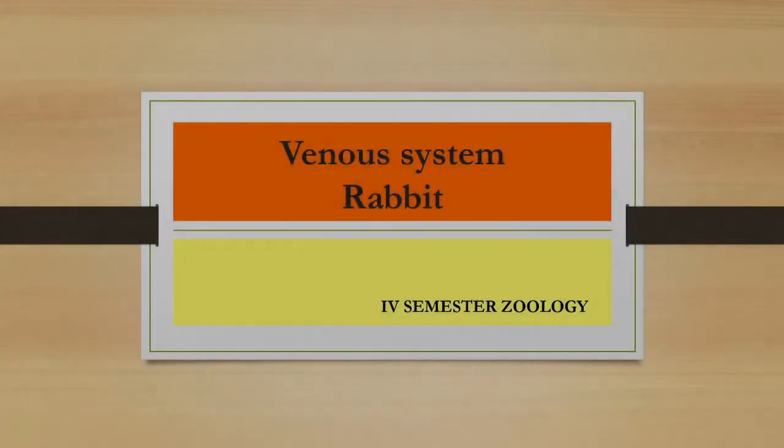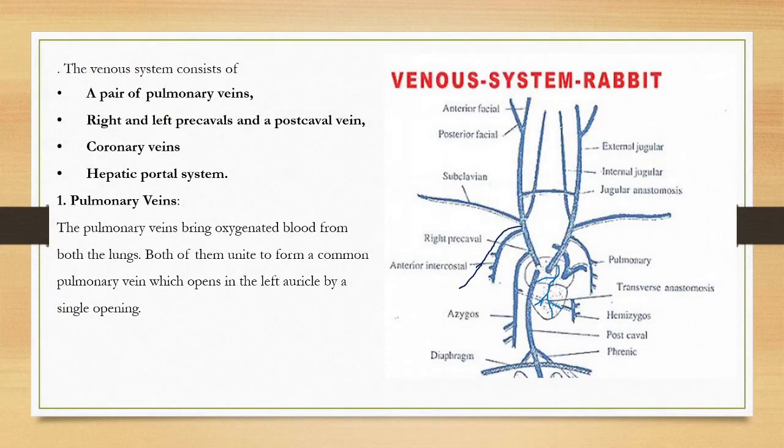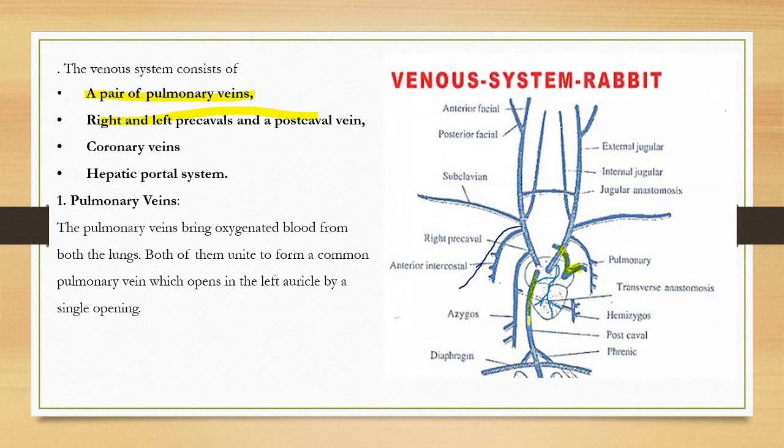The venous system of rabbit consists of a pair of pulmonary veins, right and left precaval veins, postcaval vein, coronary vein, and hepatic portal system. The right precaval vein and left precaval vein are present, along with the coronary vein.